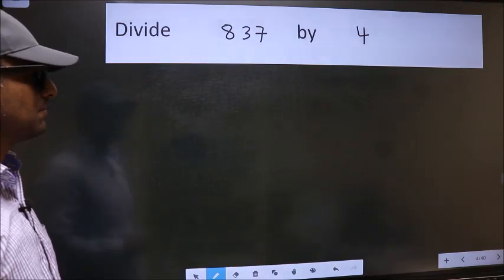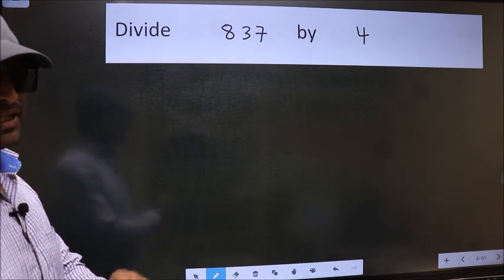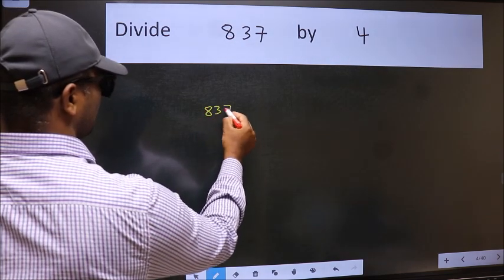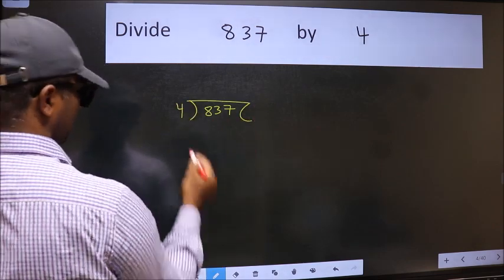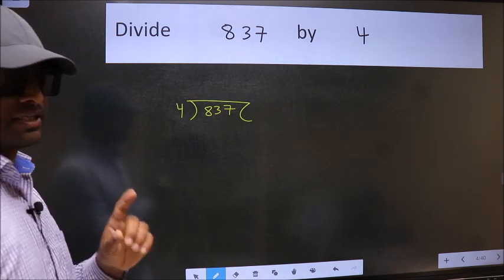Divide 837 by 4. To do this division, we should frame it in this way. 837 here and 4 here. This is your step 1.